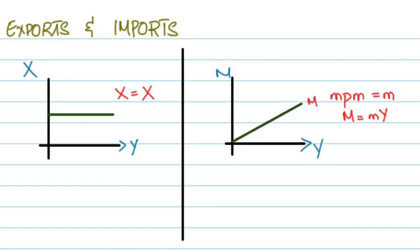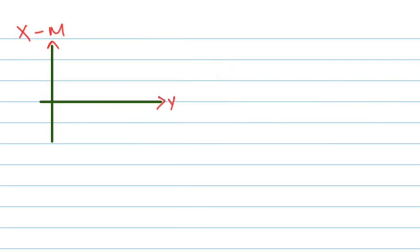This over here is X. Now let's talk about X minus M, the net exports function. If I have to sketch the net exports function, X minus M — if I expand this, this will be X minus MY. So the vertical intercept will be at X, and the gradient will be minus M. So if I sketch this, this is what it will look like: X minus MY, where the gradient is minus M.